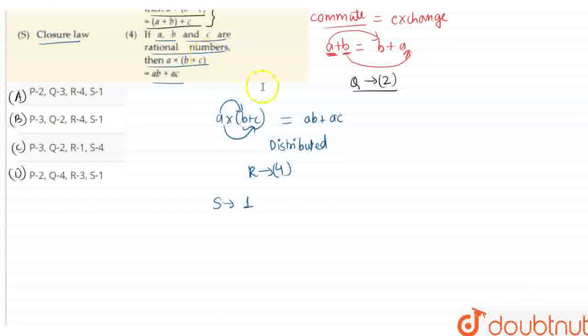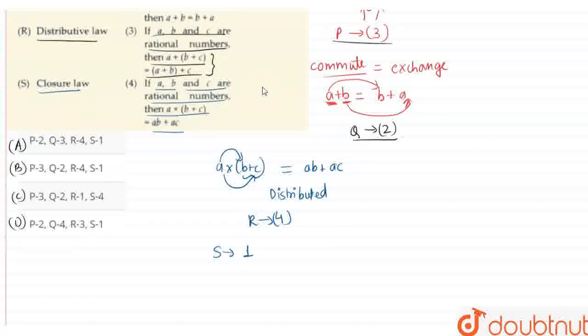To summarize: P matches with 3, Q matches with 2, R matches with 4, and S matches with 1. Therefore, option B is the correct answer for this question.